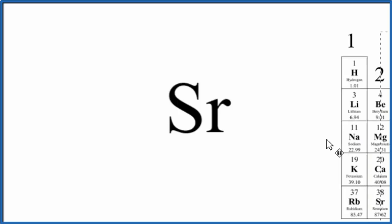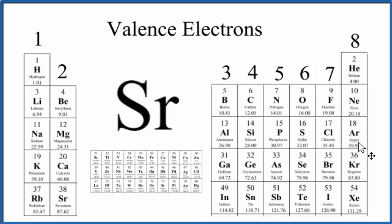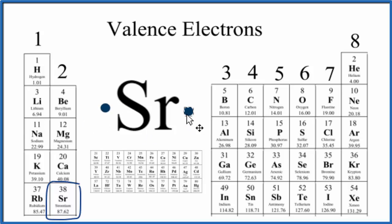There are two ways we can do this. First, if we looked at the periodic table with the groups labeled for the number of valence electrons, we could use that to figure out how many electrons we put around the Sr Lewis structure. Strontium is right here in group two. All of these elements in group two have two valence electrons. So for strontium, we just put one here and then one over here, and we're done. That's the Lewis structure for strontium.